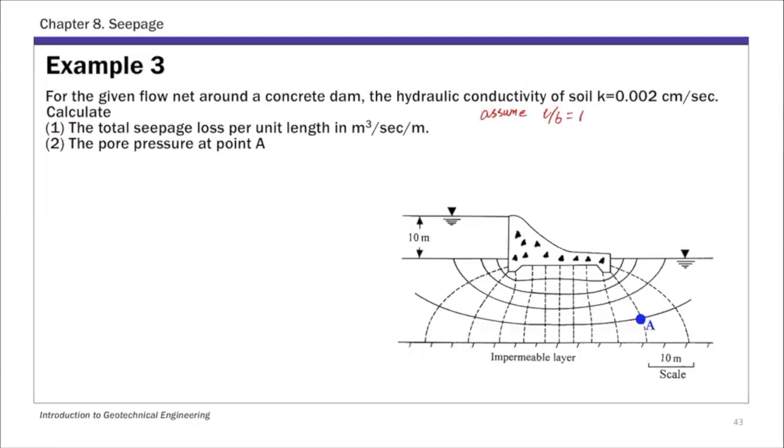For this example, we are given this flow net underneath this concrete dam, and we're going to solve for total seepage loss per unit length, so that's small q, and then the pore pressure at A, we call U sub A.